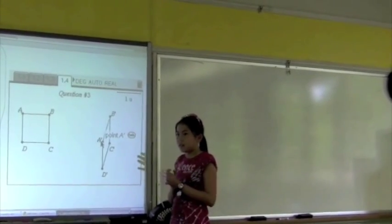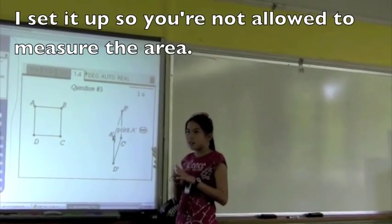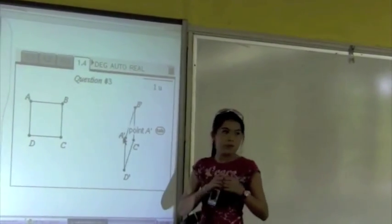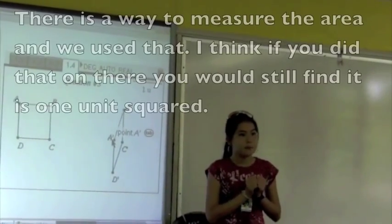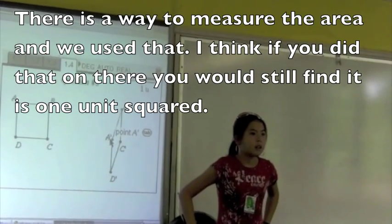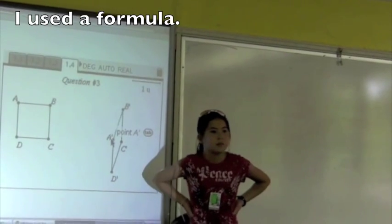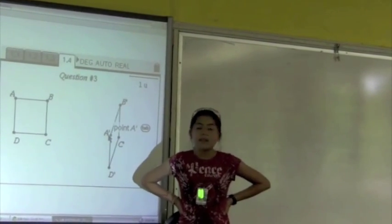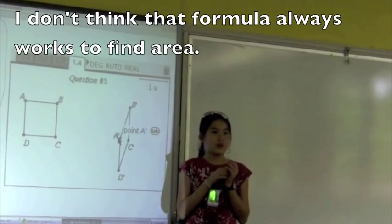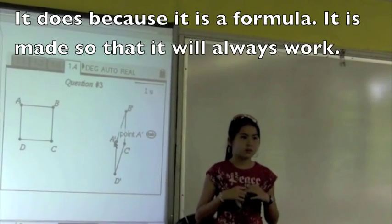Did you measure the area? Yes. I set it up so that you're not allowed to measure the area. There is a way to measure the area and we used that. I think that if you did that on the area you would still find that it's one unit squared. How did you measure the area? I used the formula. Kaylee, I don't think that formula always works to find area. It does — because it's the formula. It's made so that it will always work.